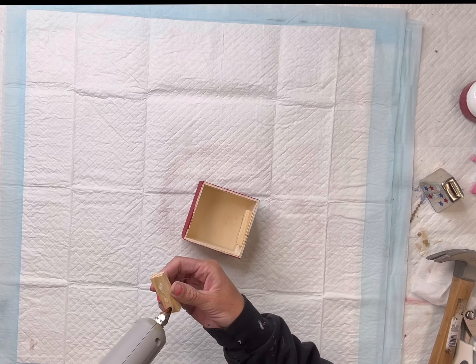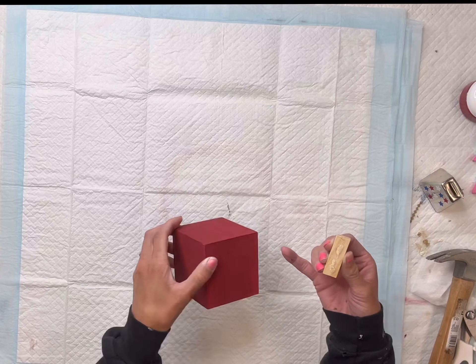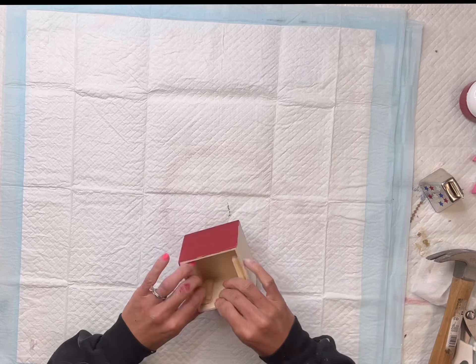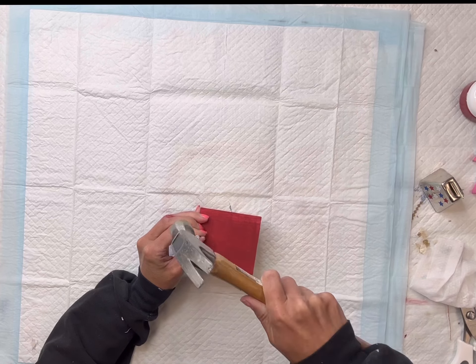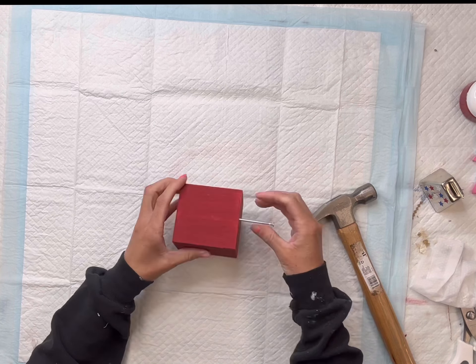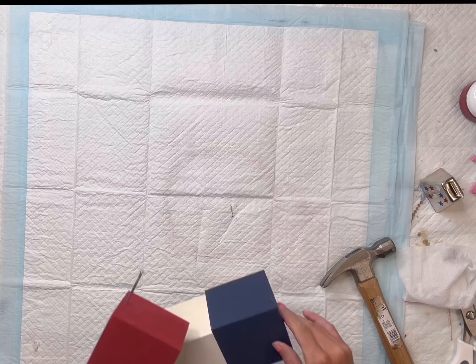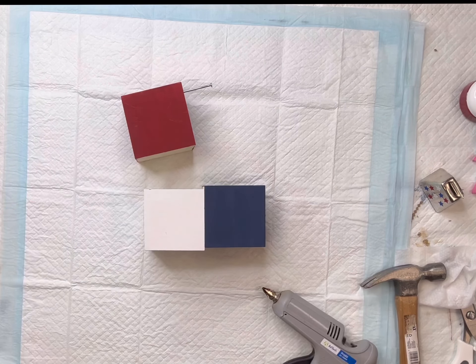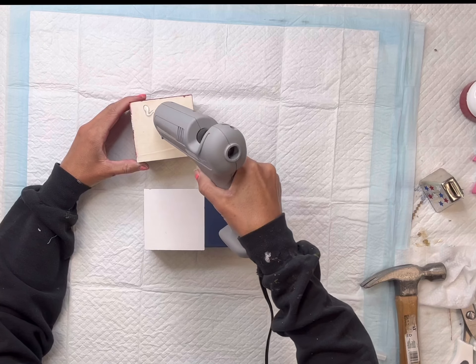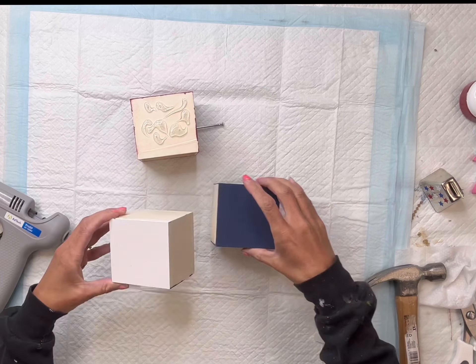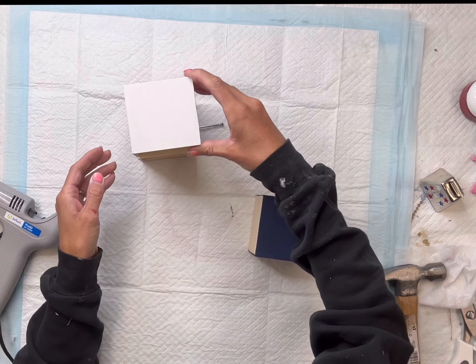Once everything is fully dry, I'm going to start gluing my pieces together. I did take a little tumbling tower block from the Dollar Tree and I glued it on the right side of the red cube. And then I put a little nail there. Since the cube was a little too thin, that's why I added the Jenga block so the nail had something to hold on to.